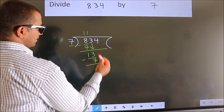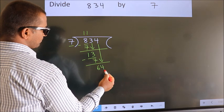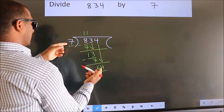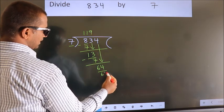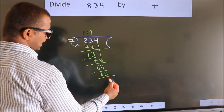After this, bring down the beside number. So 4 down. So 64. A number close to 64 in the 7 table is 9 times 7 is 63. Now we subtract. We get 1.